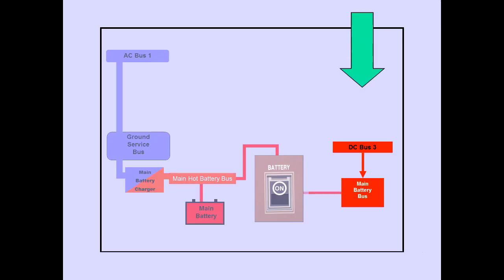The main hot battery bus is normally powered from AC bus 1 through the ground service bus and the main battery charger. Normally, DC bus 3 powers the main battery bus. When DC bus 3 is unpowered, the main hot battery bus powers the main battery bus when the battery switch is on.